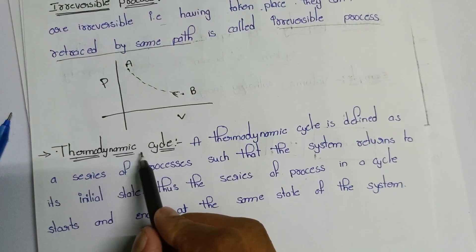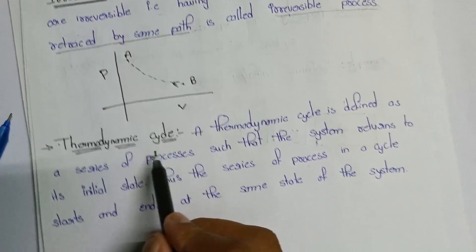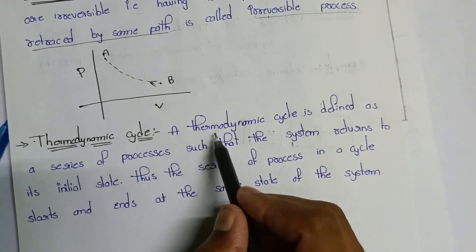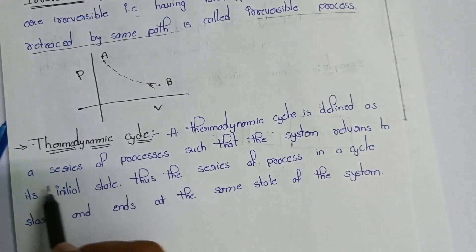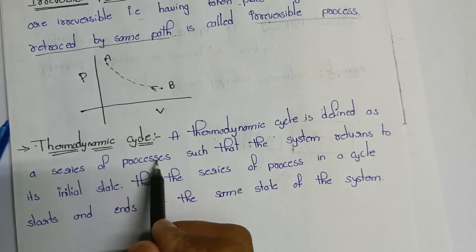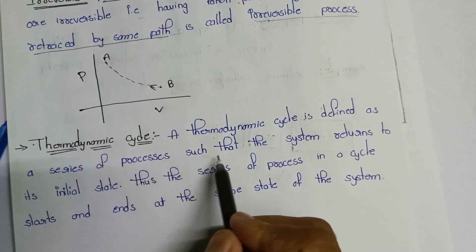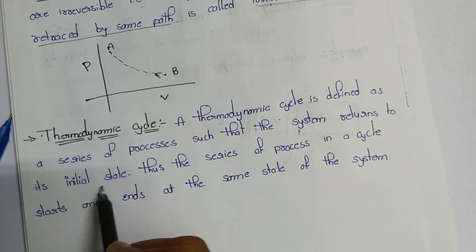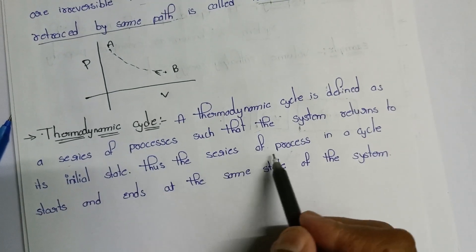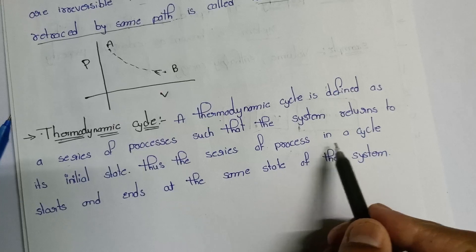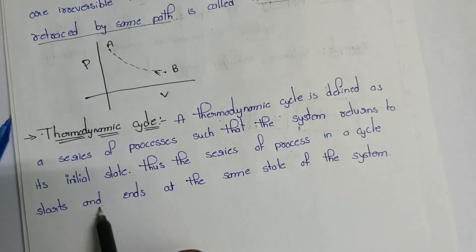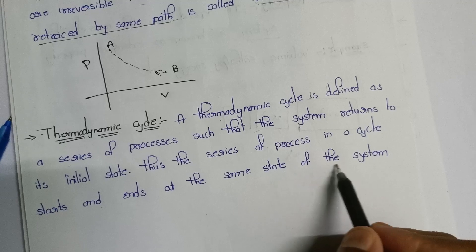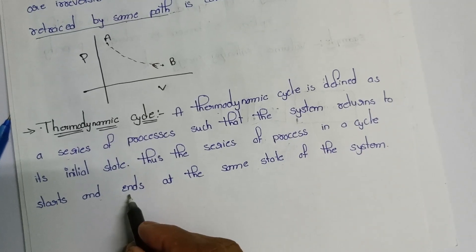The thermodynamic cycle is defined as a series of processes such that the system returns to its initial state. Thus, the series of processes in a cycle starts and ends at the same state of the system.